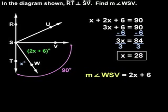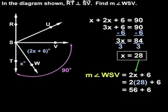Since we know that x equals 28, we can plug 28 back in for x to get 2 times 28 plus 6, which simplifies to 56 plus 6, or 62. So the measure of angle WSV is 62 degrees.